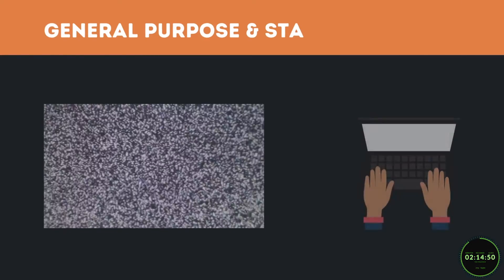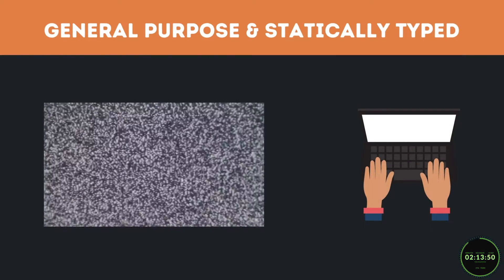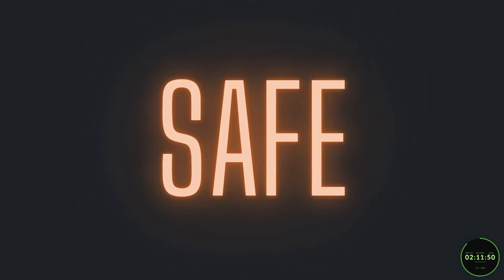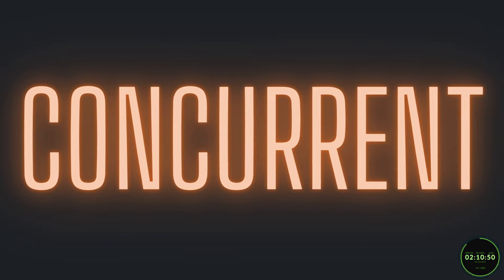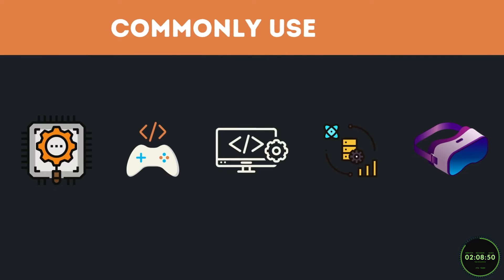Rust is a statically typed programming language designed to be fast, safe, and concurrent. It is commonly used in systems programming, game development, web development, data science, and even virtual reality.